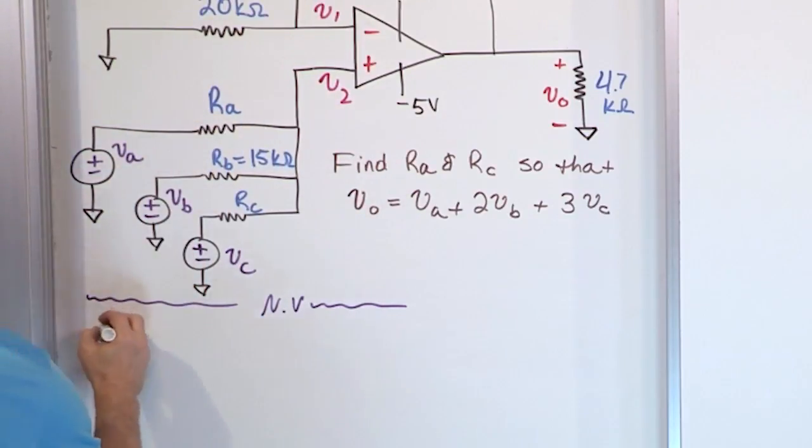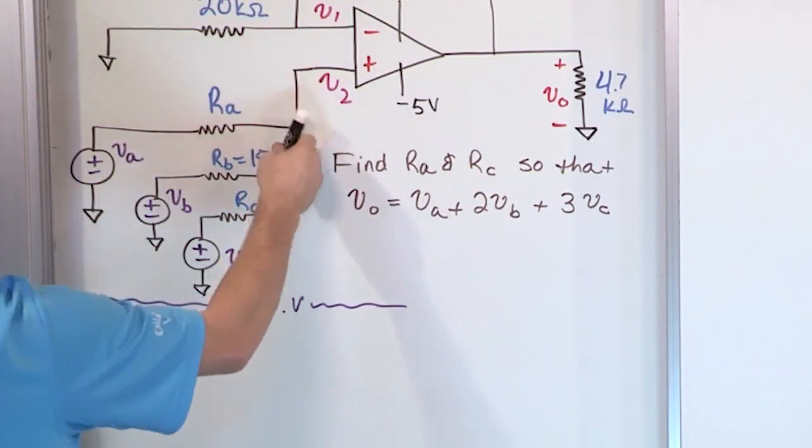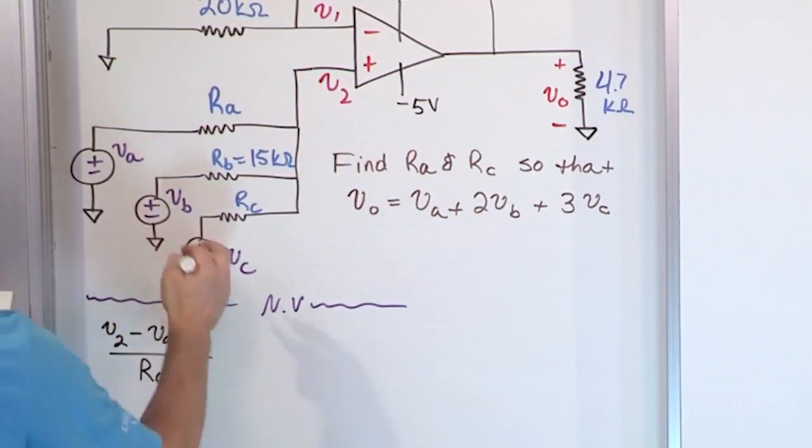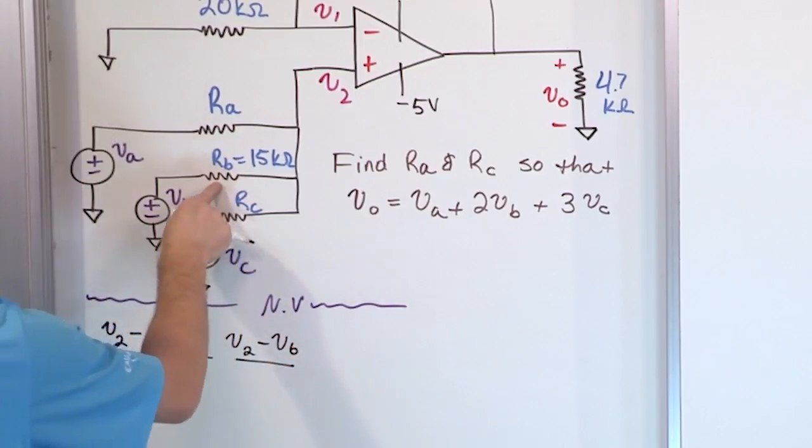So the current through this resistor is V2 minus VA over RA. So we're going to write that down as V sub 2 minus V sub A over R sub A. Simple. Current going through that resistor. Then the next stage of the game is current going through this resistor, V2 minus the other voltage on the other side, V2 minus VB over this guy.